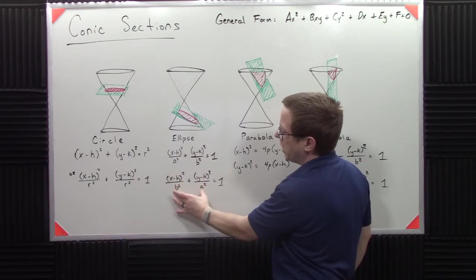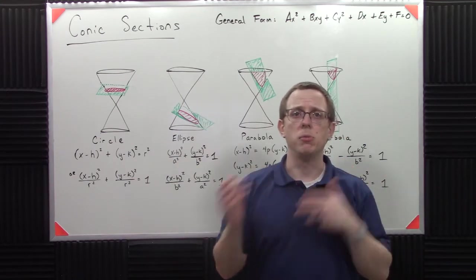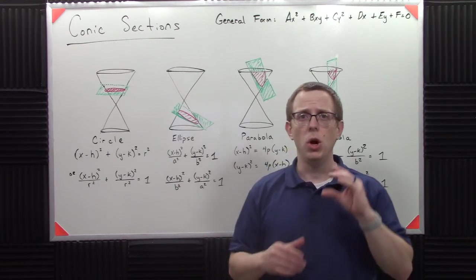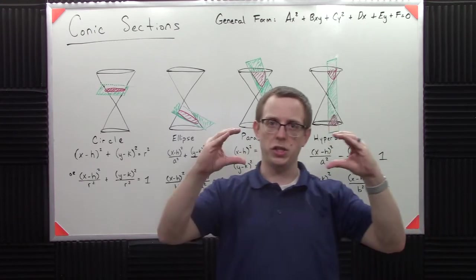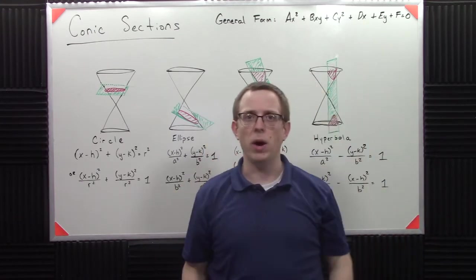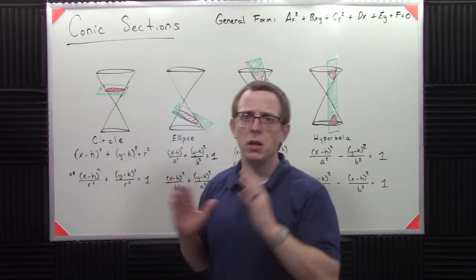And what this A and B, or B and A, one of them is referred to the major axis and the minor axis. And those relate to which one's wider than the other, or which one's larger. So that tells you whether or not it stretches this way, or stretches that way. And as we go further into this, we'll talk about each of these in more detail.